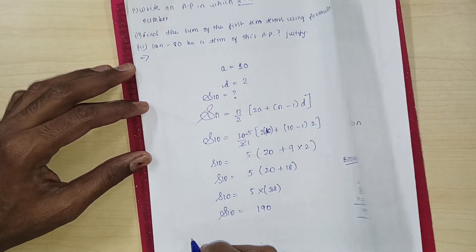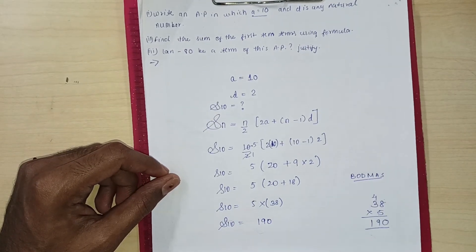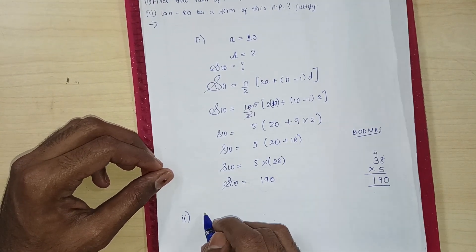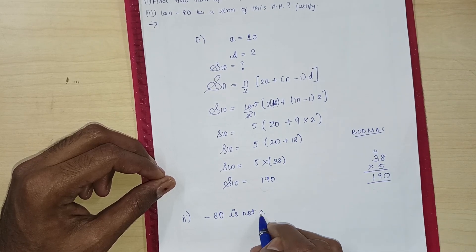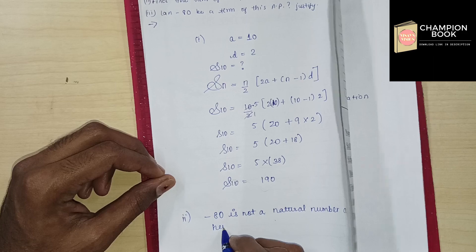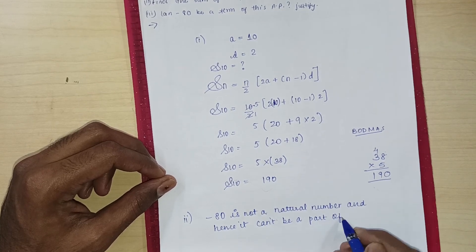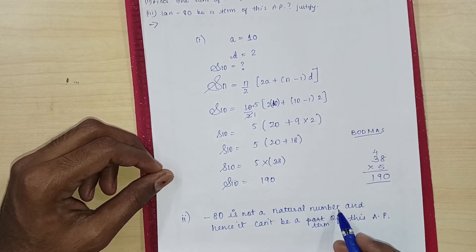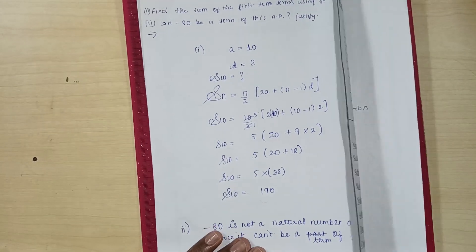You are supposed to find out the second part of the question. Can minus 80 be a term of this AP? Justify. Minus 80 is not a natural number and hence it can't be a term of this AP. This understood? Justify and write the statement.